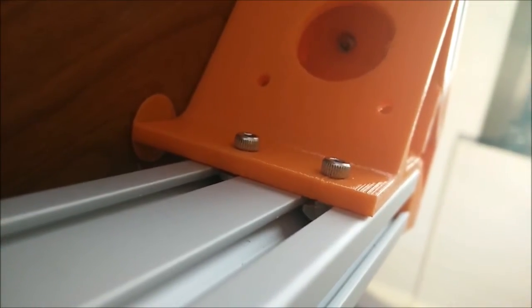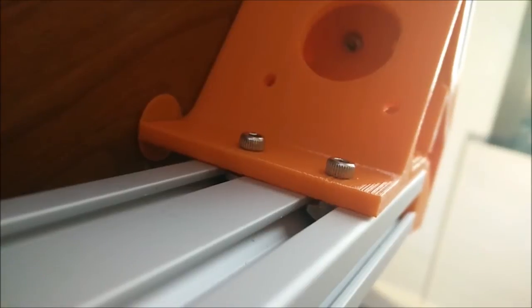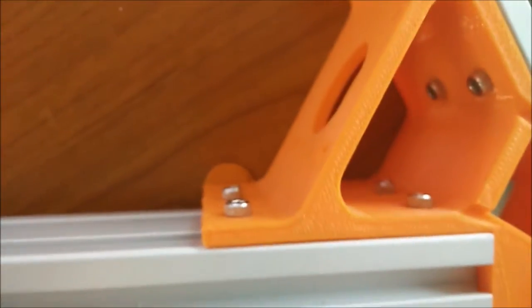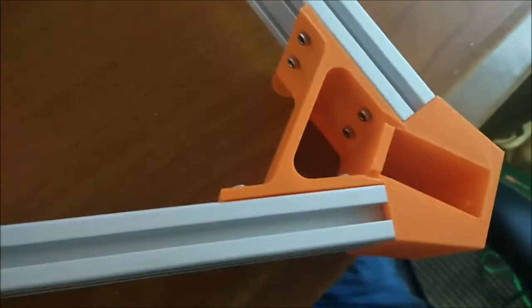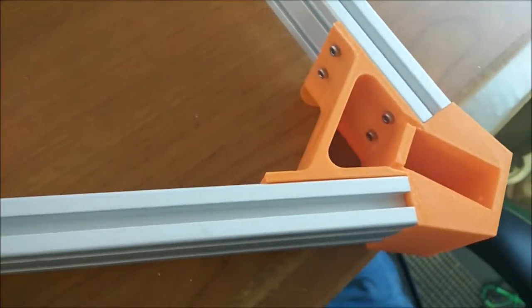This is absolutely the fastest way to connect a T-slot nut with the aluminium profile and it's also the fastest way to assemble this whole base for a Delta 3D printer.